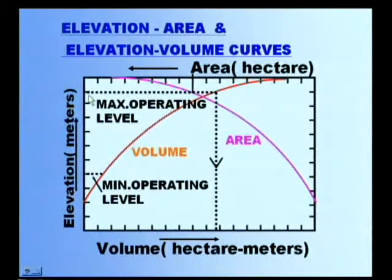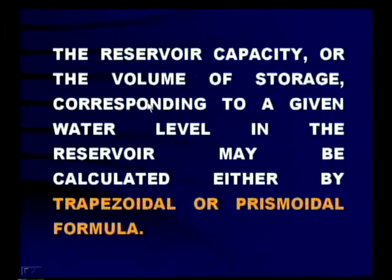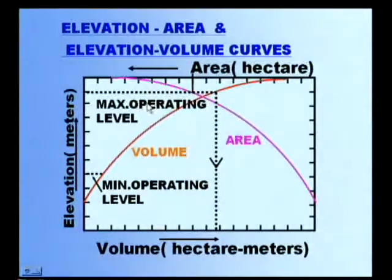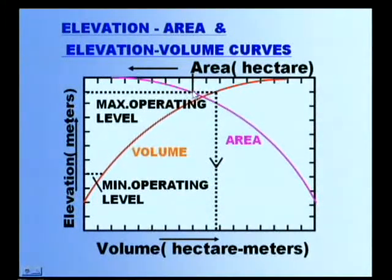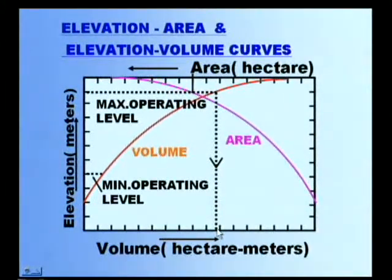Look at the elevation-area and elevation-volume curves. On the x-axis, volume in hectare meters and area are shown; on the y-axis, elevation in meters is shown. The volume-elevation curve and the elevation-area curve are plotted. The dotted line represents the maximum operating level — for this level the curve gives the corresponding area and volume. The minimum operating level is also shown.